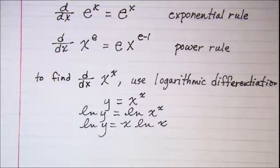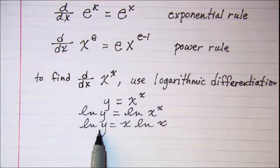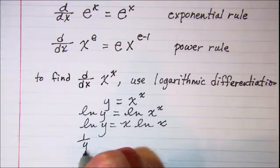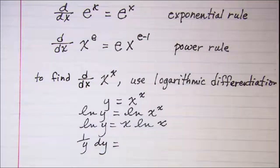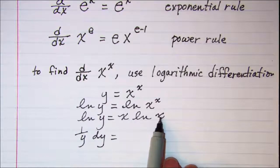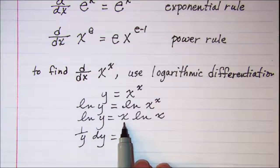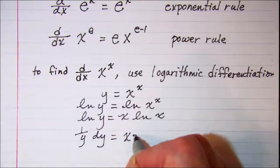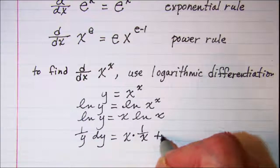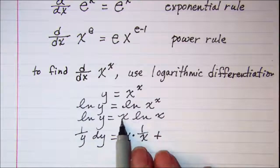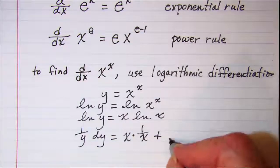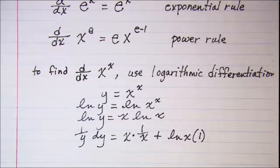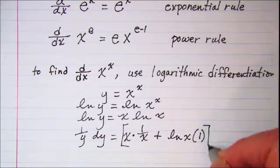Now we can differentiate both sides. So the derivative of ln y is 1 over y dy, and then this is a product, so we need to use our product rule: x times ln x, which is 1 over x, plus this factor times the derivative of x, so ln x times the derivative of x, which is 1, and all of that is dx.